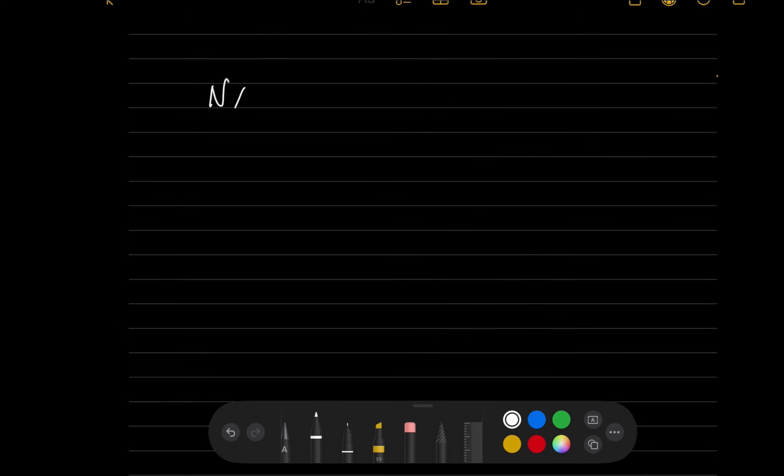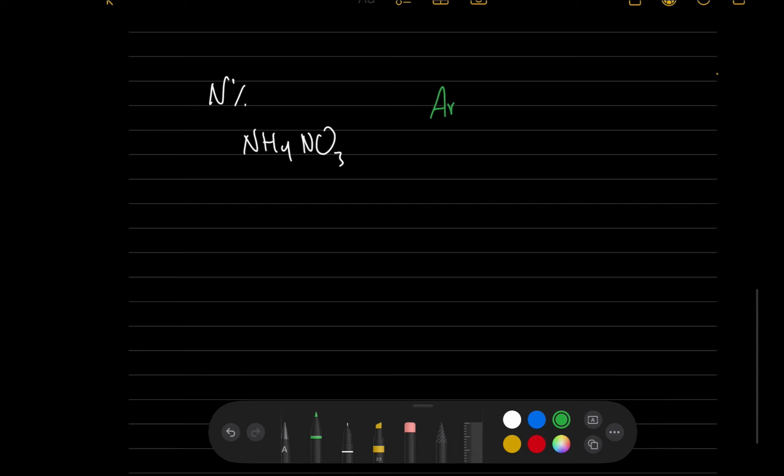If we need to calculate the percentage of nitrogen atom in ammonium nitrate NH4NO3. So at this point what should I do? As we learned, we have to take the AR of nitrogen and then we multiply it with its number.